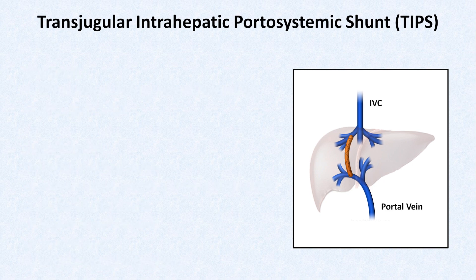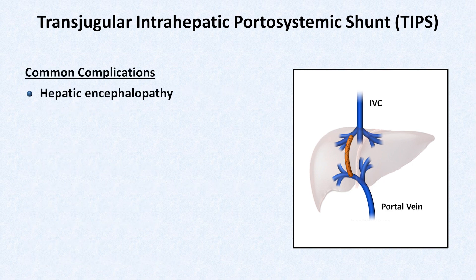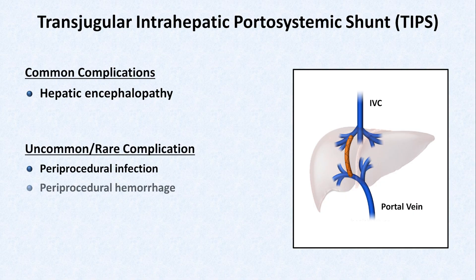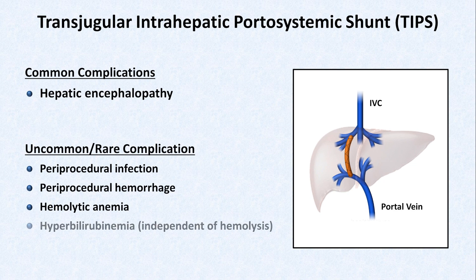By far the most common complication is hepatic encephalopathy. This makes sense since the TIPS would allow recently ingested toxins and absorbed compounds like ammonia to bypass the liver and enter directly into the systemic circulation, leading to higher ammonia levels in the brain. Uncommon and rare complications include periprocedural infection, periprocedural hemorrhage, hemolytic anemia caused by mechanical trauma of red blood cells passing through the stent, hyperbilirubinemia independent of the presence of hemolysis, and shunt stenosis or occlusion.